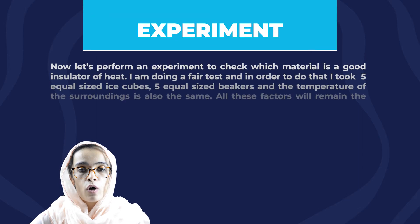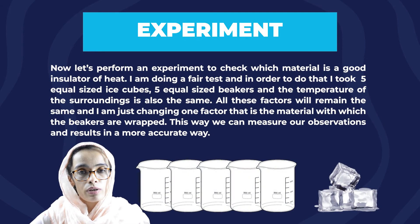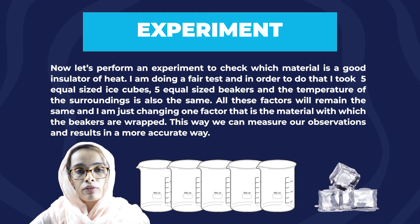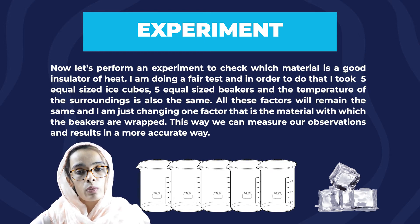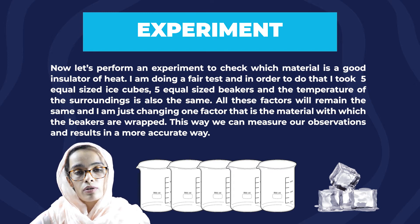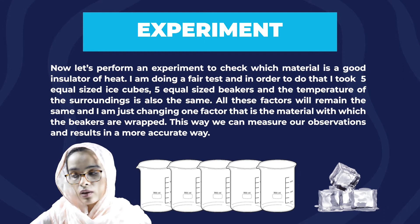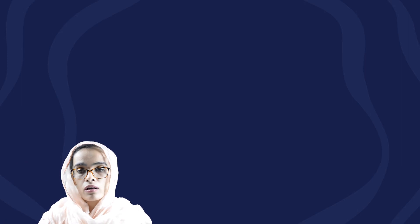Now let's perform an experiment to check which material is a good insulator of heat. I'm doing a fair test, so I have five equal-sized ice cubes, five equal-sized beakers, and the temperature of the surroundings is also the same. All these factors will remain the same; I'm only changing the material with which the beakers are wrapped, so we can measure our observations more accurately. The first beaker is not wrapped with any material, and the second one is wrapped with paper.